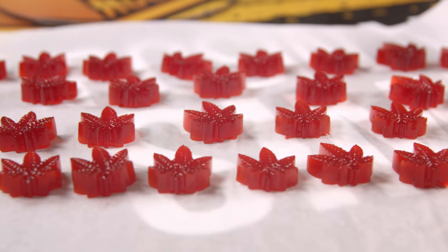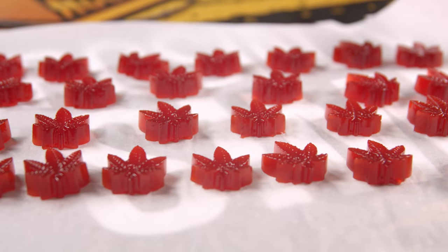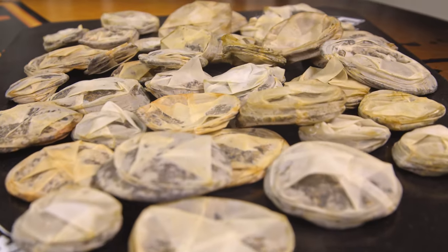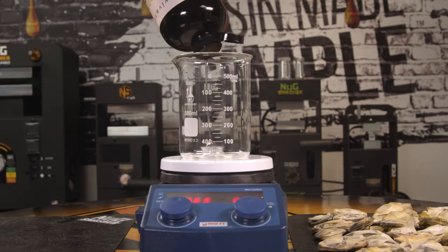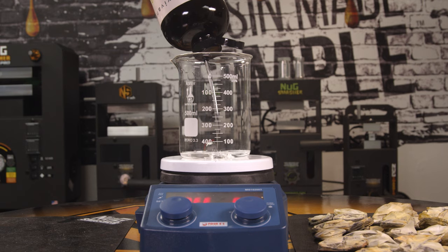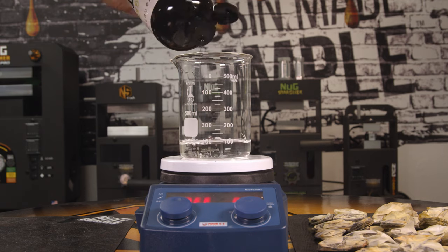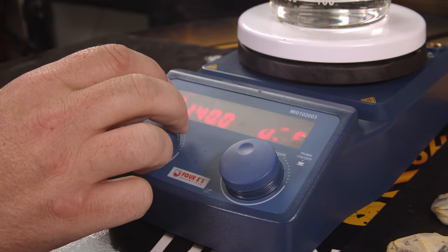What's up guys, we've got a really cool video for you today. A lot of people always ask us what do you do with your leftover pucks? Well, we've got about 40 of them and we're going to infuse them with 100 milliliters of MCT oil. So we're going to add about 100 milliliters to our beaker.